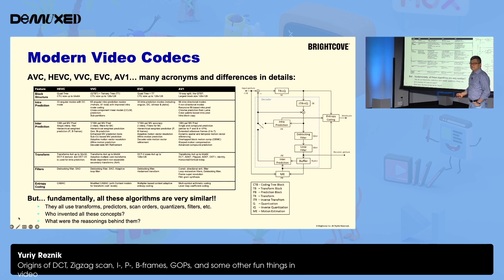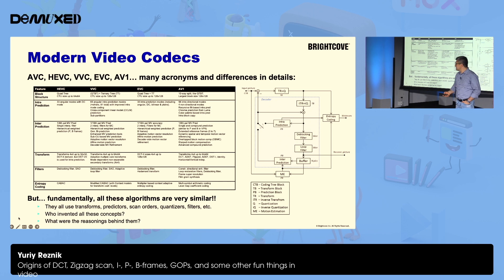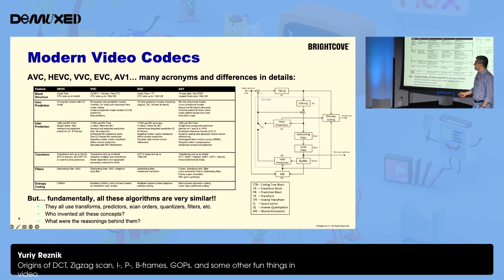The intent here is just to show that there are many small details, but in principle all those codecs are very similar. They all use the same fundamental building blocks — transforms, predictors, scan orders, quantizers, filters, entropy coding, and so on. The key question is how we end up with this particular mix of techniques, and what all those techniques were built for to begin with, and what even enabled us to think about building them.